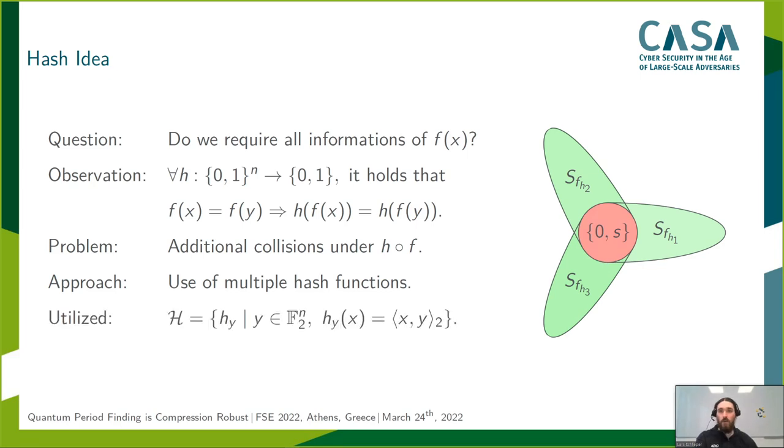For our proofs, we used a set of universal hash functions, such as, for example, the set of the scalar products modulo 2. It is worth noting that we conjecture that the necessity of multiple hash functions is just a proof artifact, and that in most cases one single hash function is sufficient. Or in other words, that with high probability each of these subspaces already contains only the zero and the s-vector.